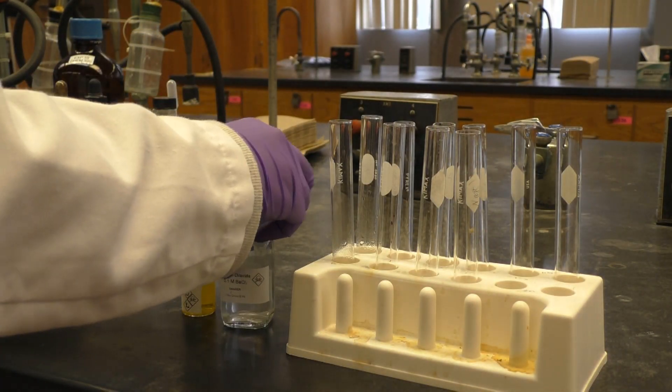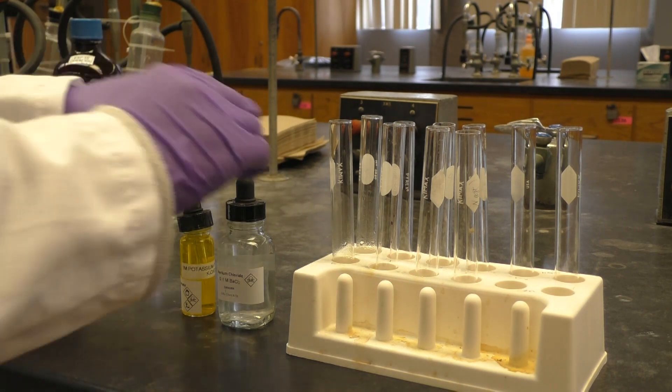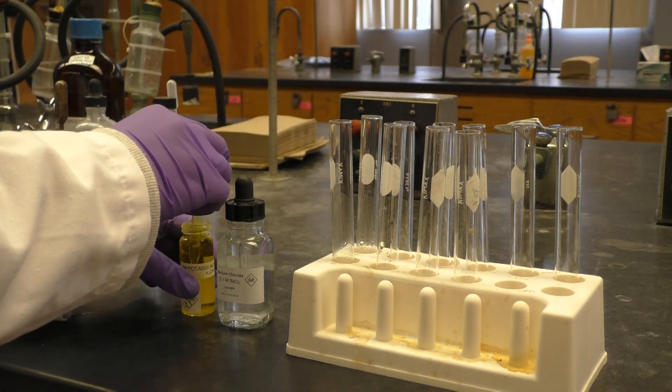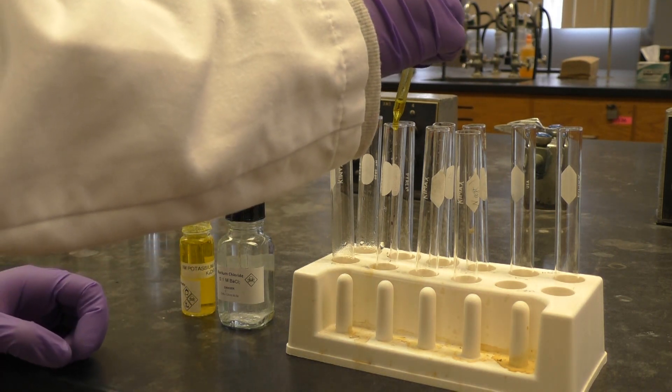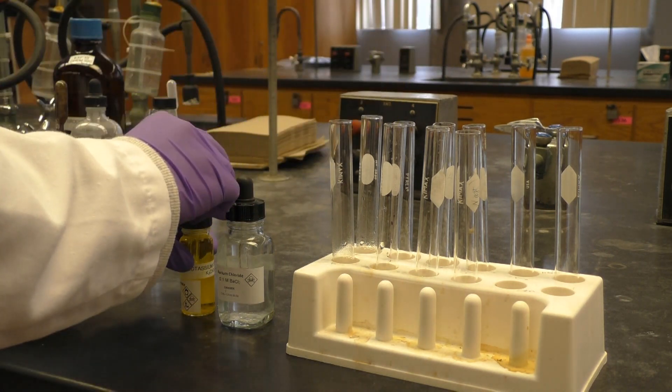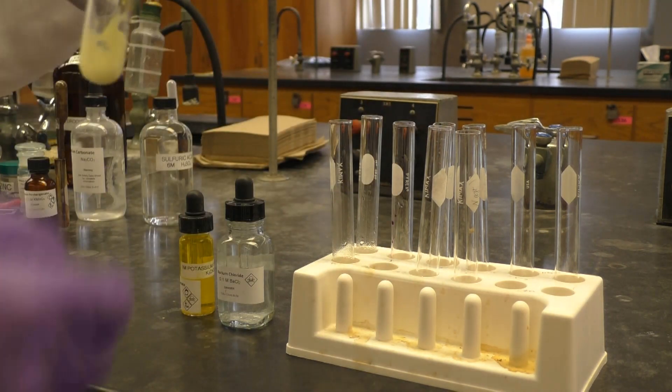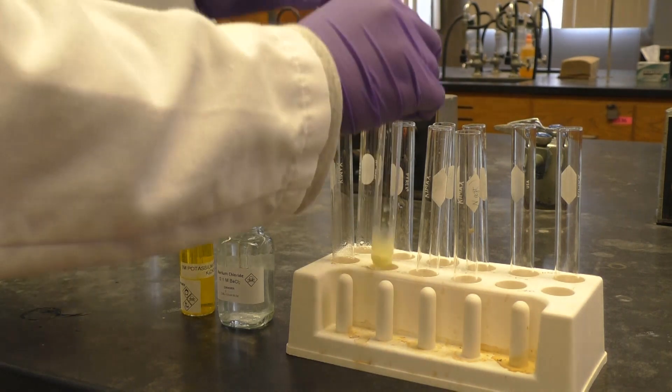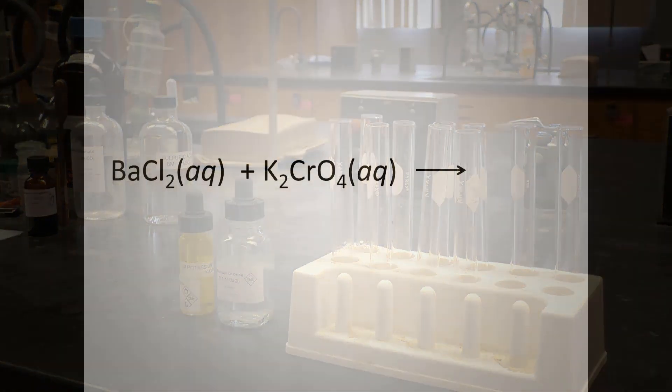On to the metathesis reactions. First, we'll show one that forms a solid product, thus this is known as a precipitation reaction. We are adding one milliliter 0.1 molar barium chloride to the tube, followed by two drops of one molar potassium chromate. We see a solid forms in the tube. What could that solid be? Refer to table 5.1. Could it be barium chromate?